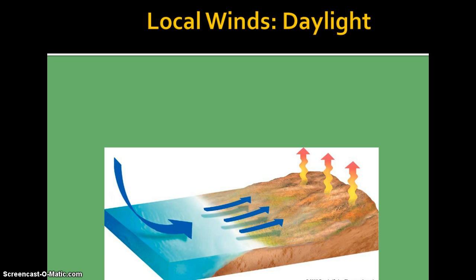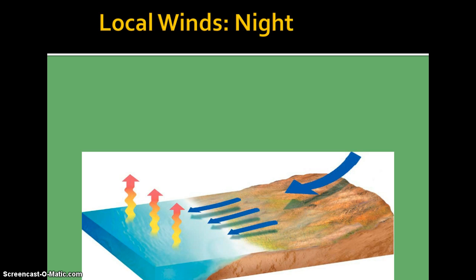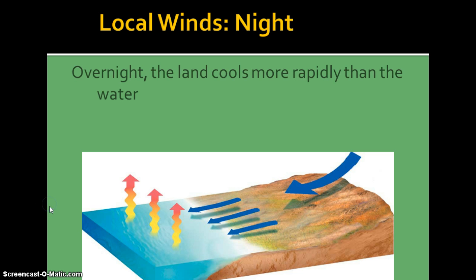We also have sea breezes and land breezes, which are types of local winds. During the daytime, when the land is hot, the warm air rises and cooler air from the ocean comes in to take its place. We call these sea breezes because we name winds based on where they're coming from — coming from the sea to the land. At nighttime, the opposite happens. When the sun goes down, the sand cools quickly while the water stays about the same temperature. So now that air over the water rises and the cool air from the land rushes in to take its place — that's called a land breeze.